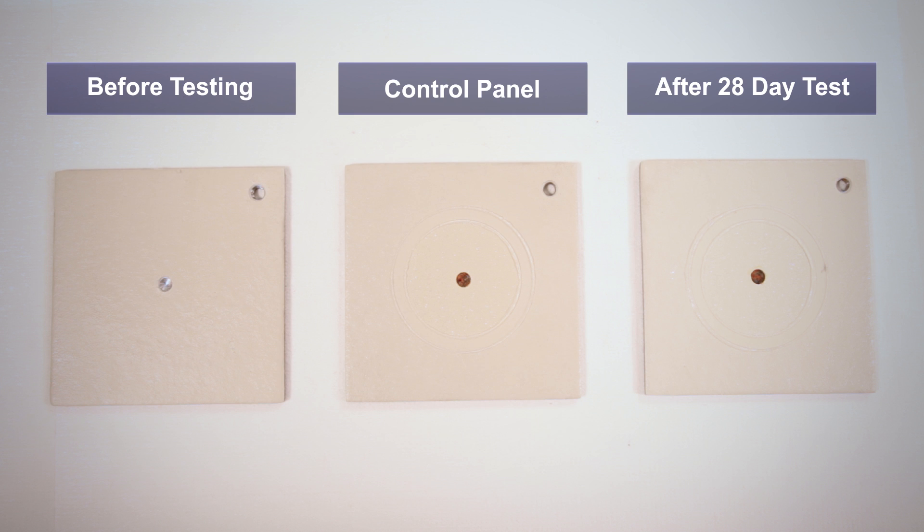A report is made on the changing colour of the coating, the current deviation and the extent of disbonding as an average distance from the damaged site. A record of the panel is made by either photograph or photocopy. The test is continued for 28 days or longer where previous test results have shown little indication at this period given good test results.